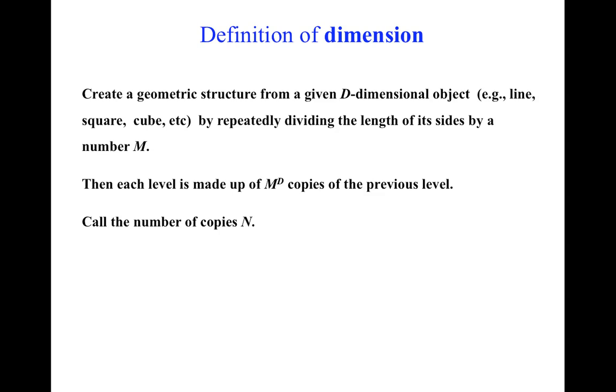So let's call the number of copies N. So we have N is equal to M to the d. We're just renaming this to N. Now we can define d by taking the logarithm of both sides. So there we have log N is equal to d times log M, using one of our logarithm rules that we saw in the previous video.